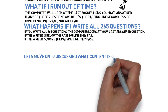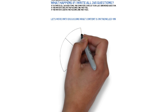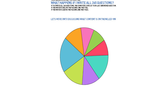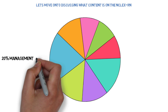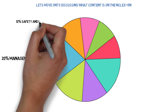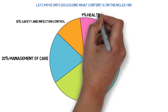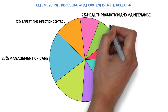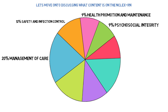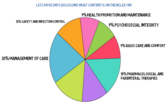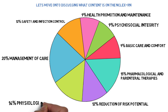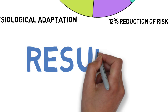The content on the NCLEX RN can be broken down into eight categories: 20% management of care, 12% safety and infection control, 9% health promotion and maintenance, 9% psychosocial integrity, 9% basic care and comfort, 15% pharmacological and parenteral therapies, 12% reduction of risk, and 14% physiological adaptation. For a more in-depth breakdown, visit ncsbn.org.